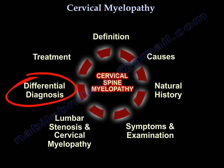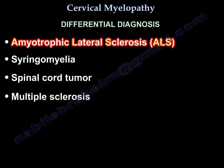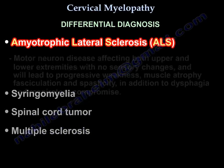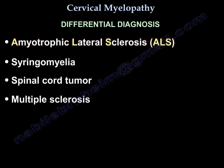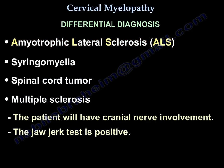Differential diagnosis includes ALS — amyotrophic lateral sclerosis — a motor neuron disease affecting both upper and lower extremities with no sensory changes, leading to progressive weakness, muscle atrophy, fasciculation, dysphagia, and respiratory compromise. Also consider syringomyelia, spinal cord tumor, and multiple sclerosis. In multiple sclerosis, the patient will have cranial nerve involvement and a positive jaw-jerk test.